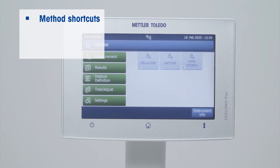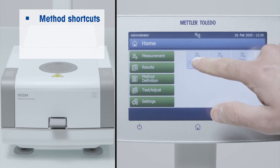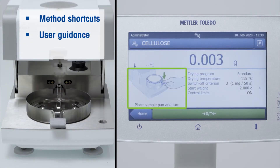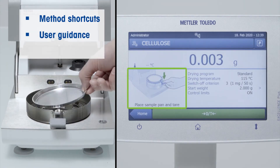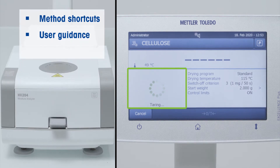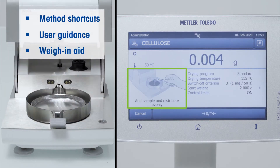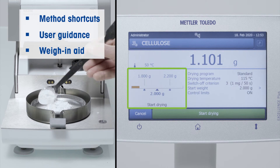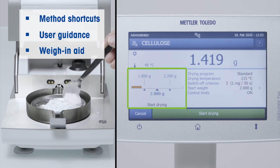Functionalities such as method shortcuts, user guidance with text and graphics during sample preparation and measurement, and weigh-in aid ensure that every operator is following the right procedure.